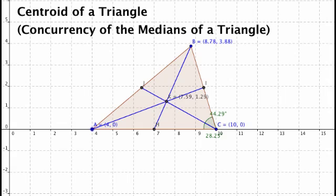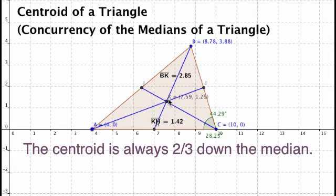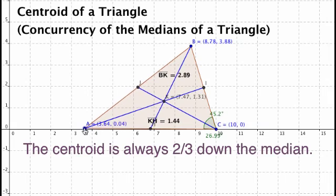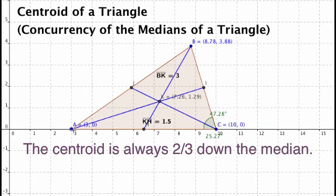The first property is that it actually cuts the median into two segments that are in a certain ratio. And the ratio can become clear if we find some friendlier numbers. Here's one.